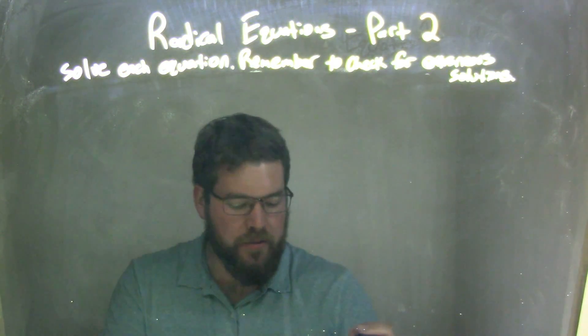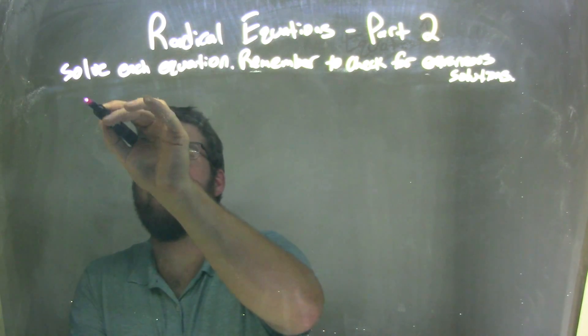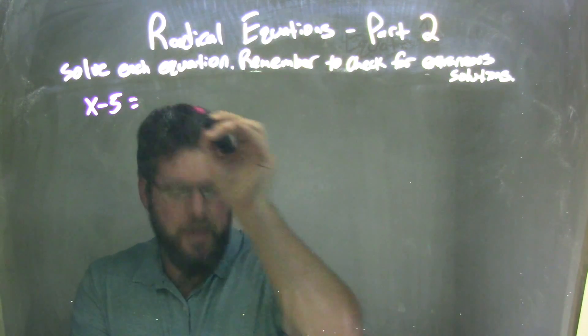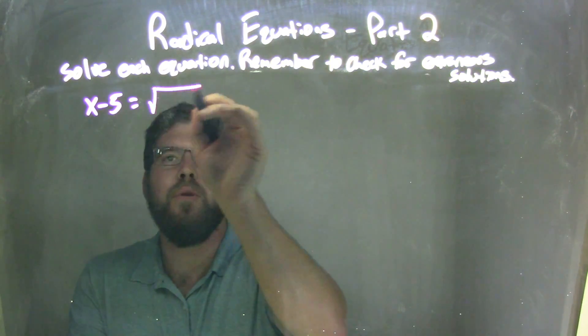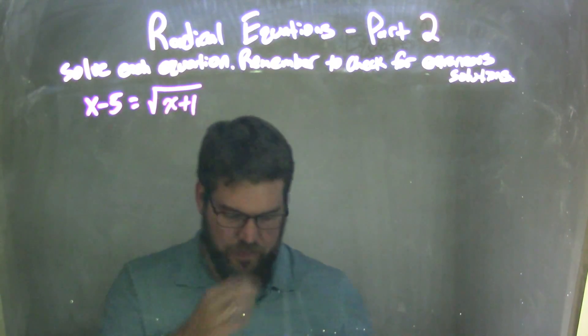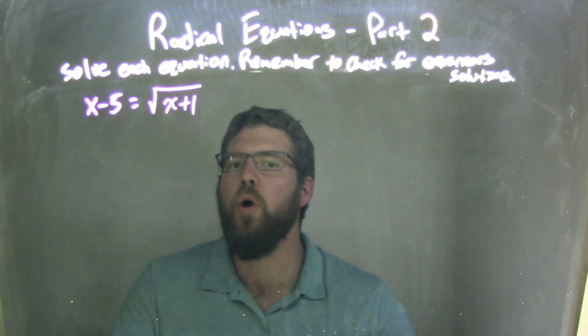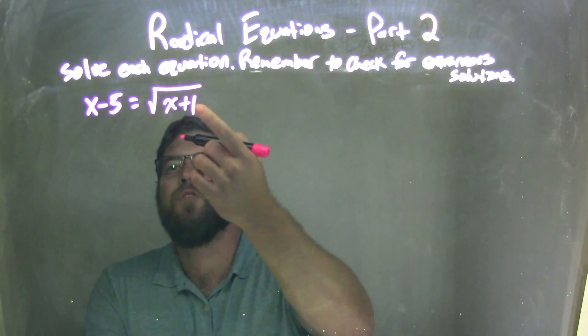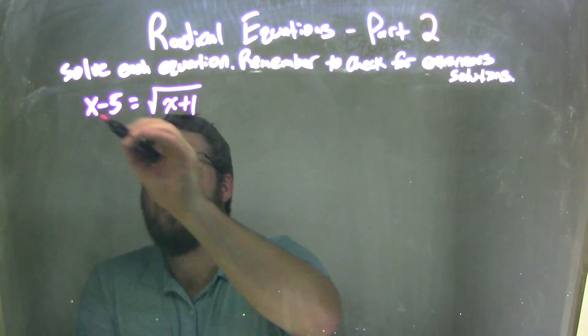If I was given this equation, x minus 5 equals the square root of x plus 1, well, the square root's already isolated, so I'm going to square both sides to eliminate that square root.